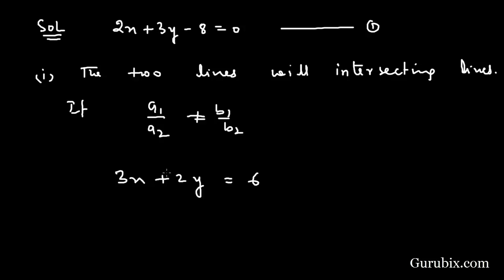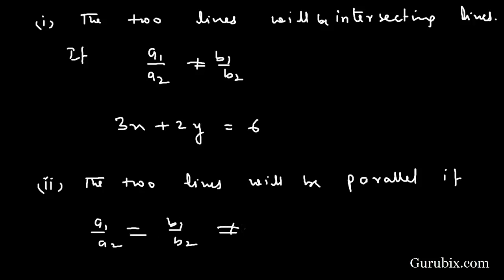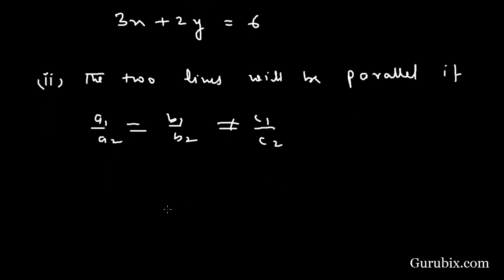For case 2, the two lines will be parallel if a1 over a2 equals b1 over b2, but c1 over c2 is not equal. This means the equation will be 2x plus 3y minus 6 equals 0.